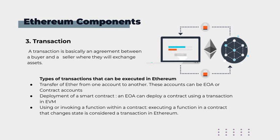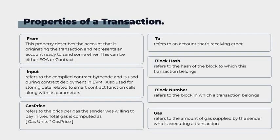Let's look at the properties of a transaction. The 'from' property describes the account originating the transaction — an account ready to send some Ether — and can be either an externally owned account or a contract account. The 'to' property refers to the account that is receiving Ether. 'Input' refers to the compiled contract bytecode used during contract deployment in the EVM, and is also used for storing data related to smart contract function calls along with their parameters.